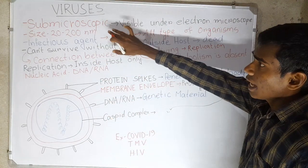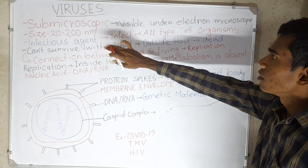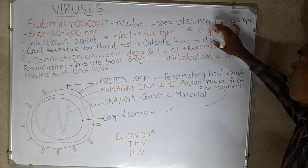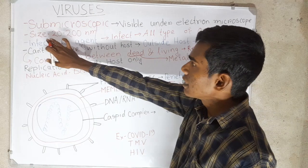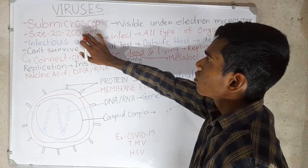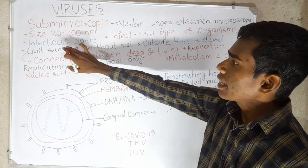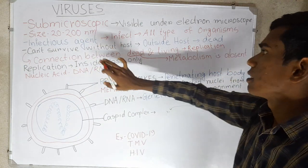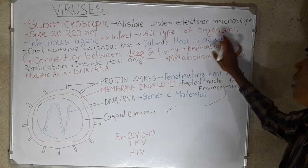Viruses are the sub-microscopic organisms which are visible under electron microscope only. Their size is about 20 to 200 nanometers. They are infectious agents and they can infect all types of organisms.